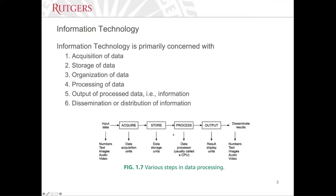Information technology is basically the technology that deals with data acquisition, data storage, data organization, data processing, information output, and information dissemination. So if you have an IT system, the system is able to obtain the data — that's what we call data acquisition. The platform or software is then able to store and organize the data so it can be processed by the machine. The data is processed into information, which is then distributed to the end user.